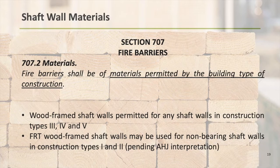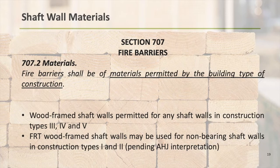We have to define what construction type our building is. If you're framing the rest of the building with wood, chances are you're going to be Type 3, 4, or 5 construction. The short answer is: if the rest of the building is framed with wood, then the shaft walls can be framed with wood. Let's take a deeper look at the differences between these construction types, focusing on Types 3, 4, and 5 — the three types the building code allows to be framed with wood throughout.